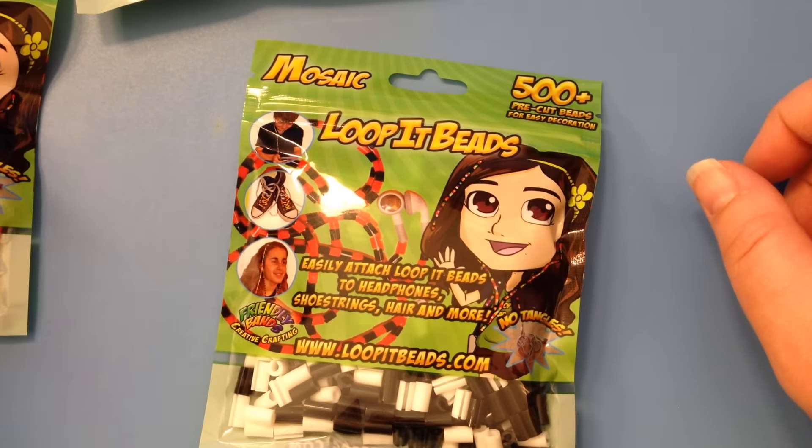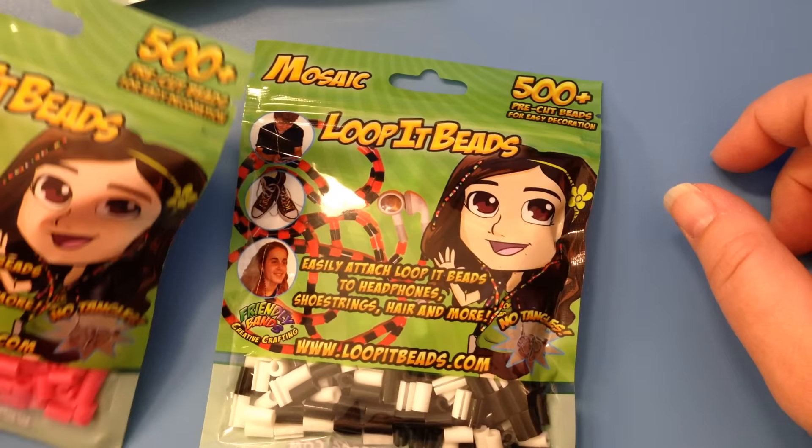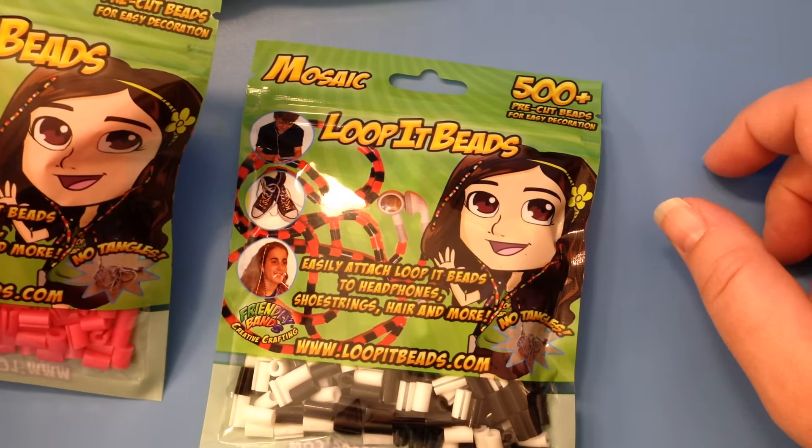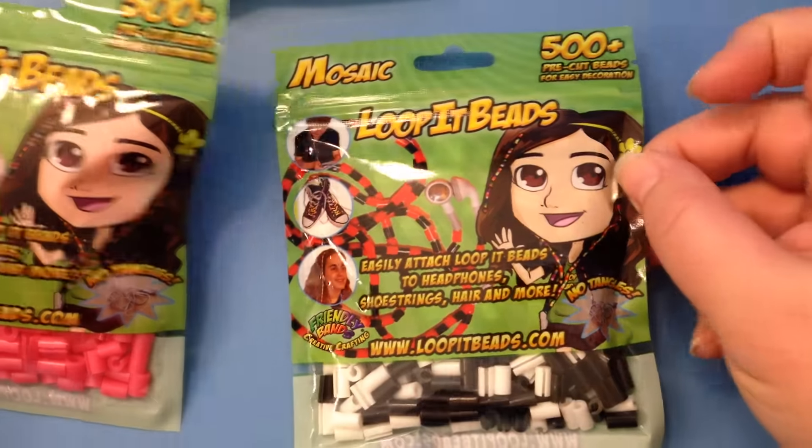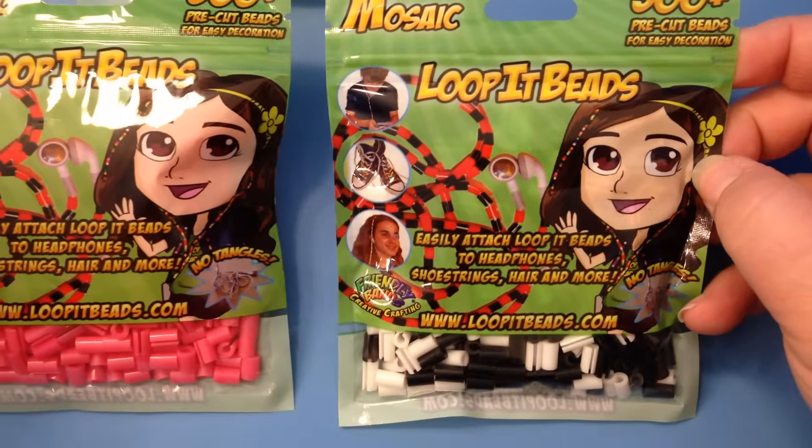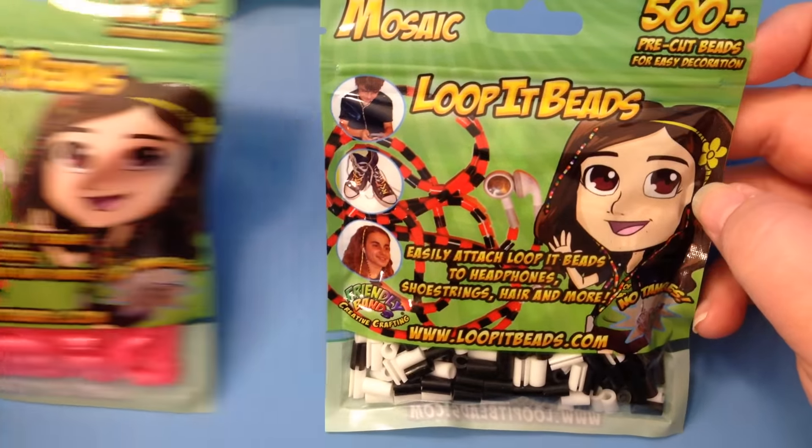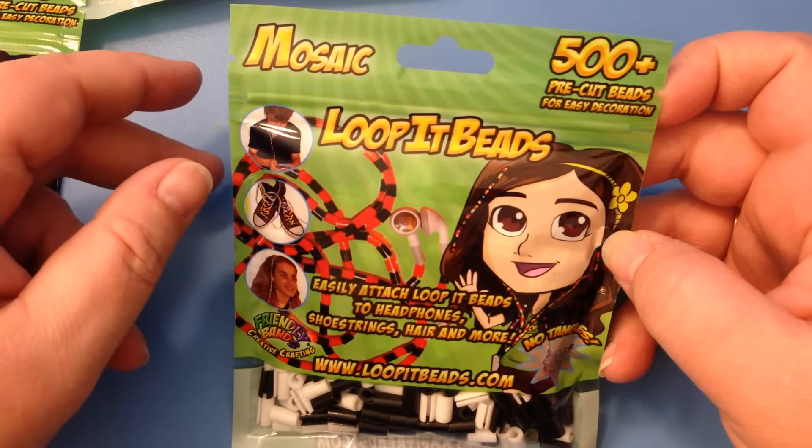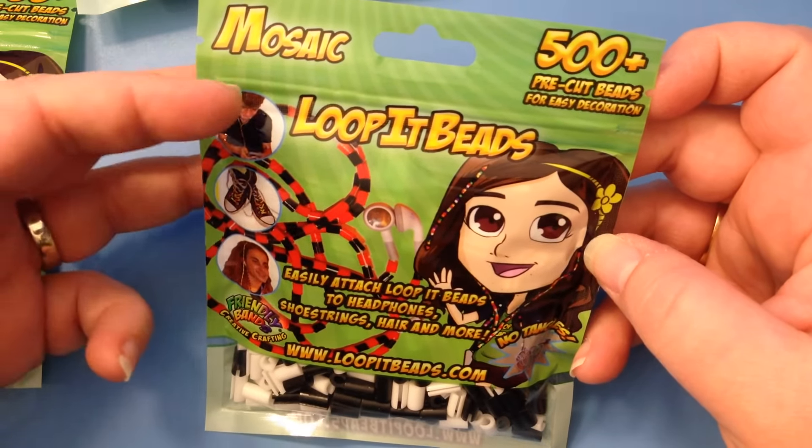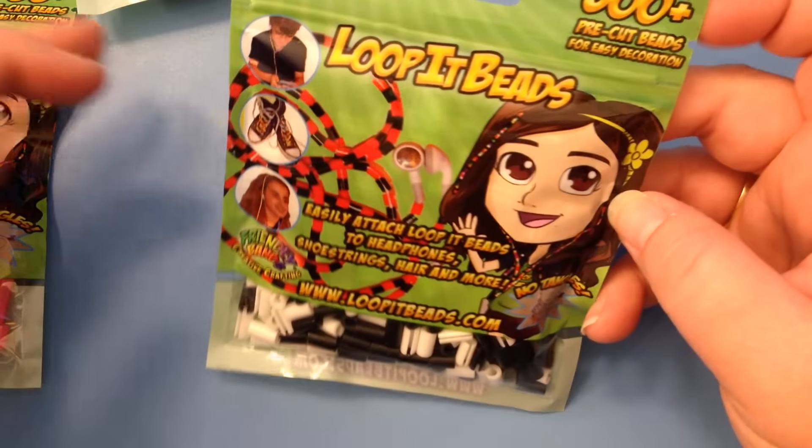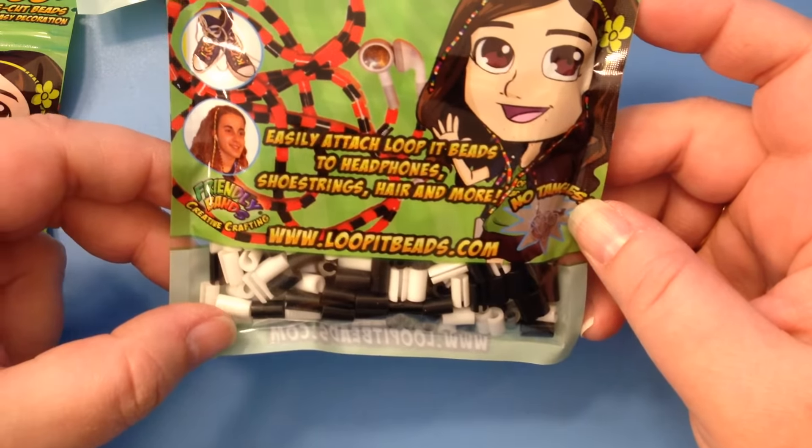Hi, this is Kate from Izalicious Designs. Today I'm really lucky to be able to share with you something that I've been given a sample of. This is Loop It Beads. They're so clever. They come in packs of 500. They're pre-cut beads and they come in a variety of different colors. You can find them at www.loopitbeads.com.